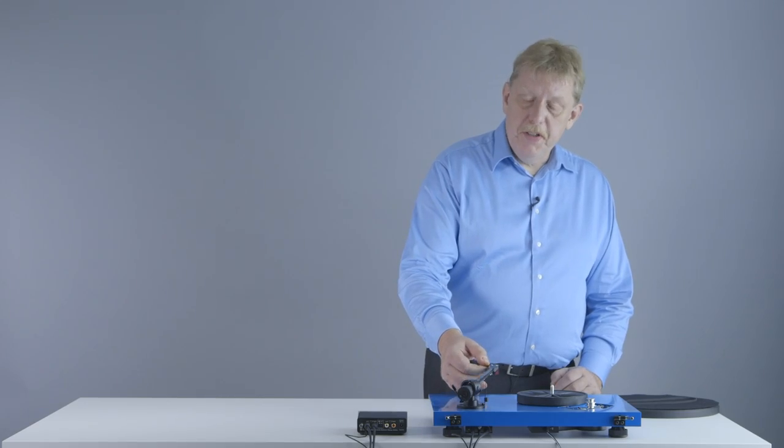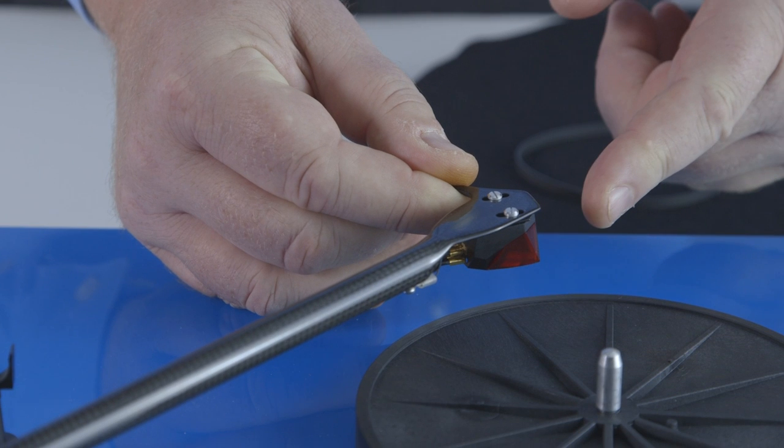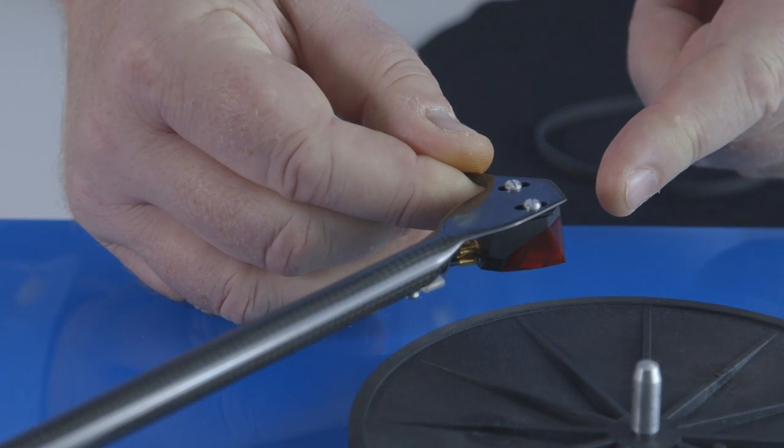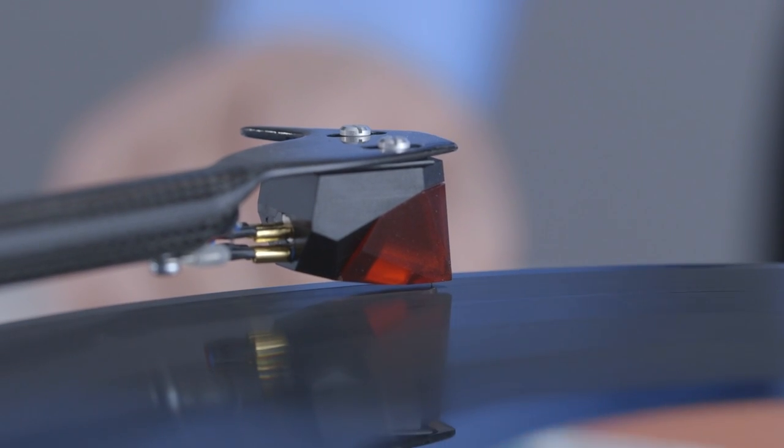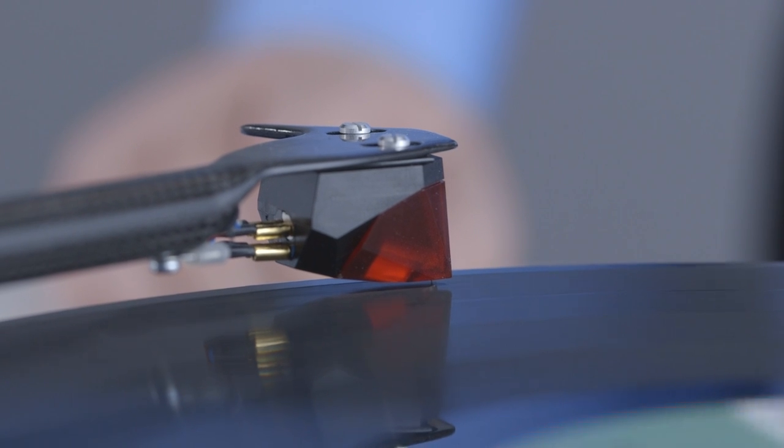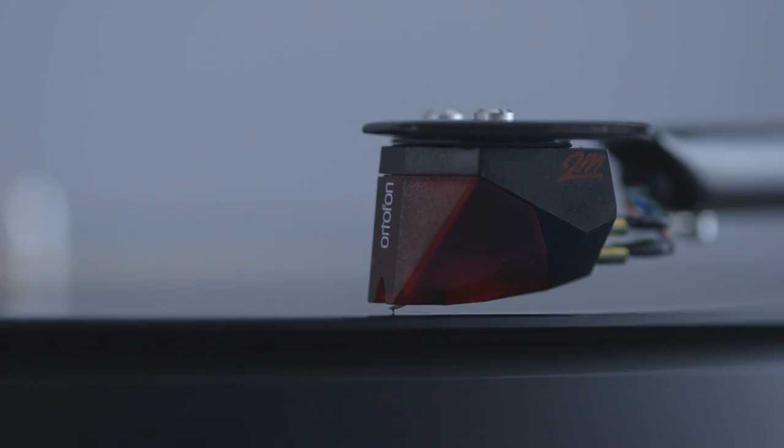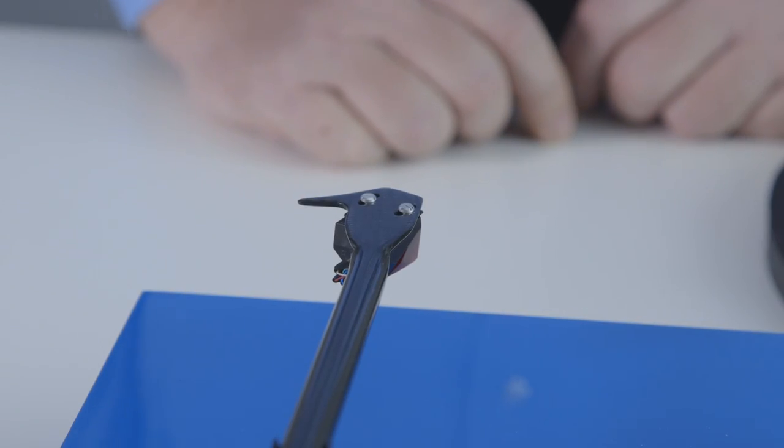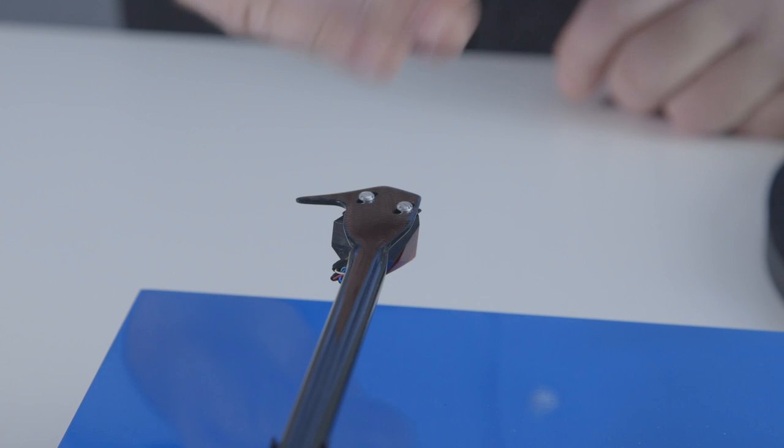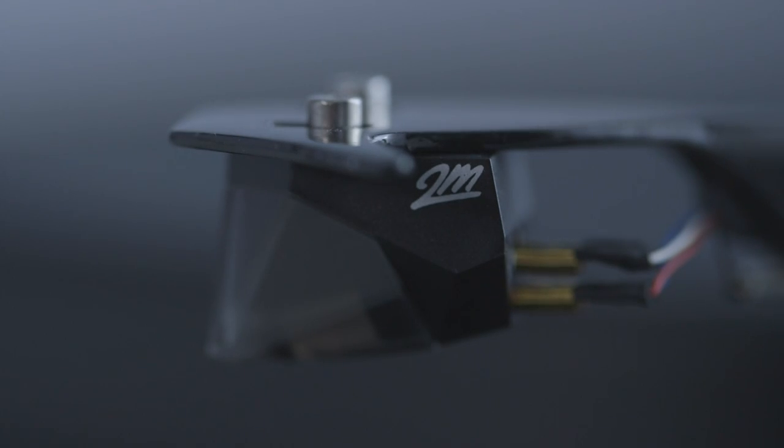And last but certainly not least, there is the cartridge. Many Project turntables like this Debut Carbon come with factory installed high performance cartridges made by Ortofon. Since 1918, Ortofon is the global leader in the manufacturing and supply of phono cartridges. No cheap, poor quality, cost saving units here.